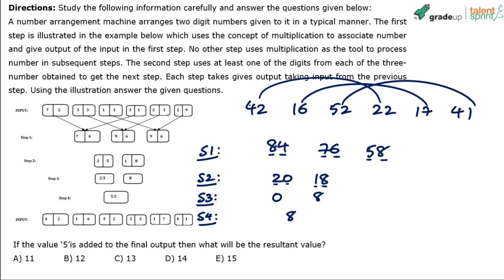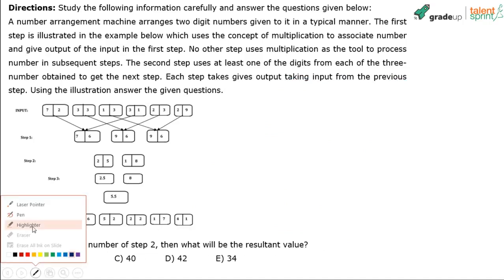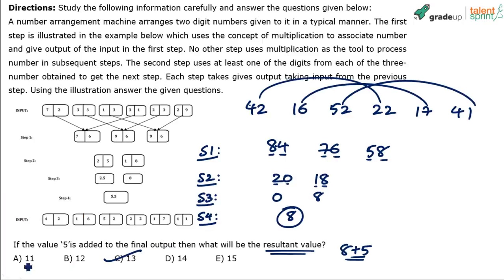Now look at the questions. First question: if the value 5 is added to the final output, what will the resultant value be? The final output is 8, and 8 plus 5 equals 13 — option C is the answer. Second question: if you add both numbers of step 2, what is the resultant value? The numbers in step 2 are 20 and 18; 20 plus 18 equals 38 — option B is the answer.